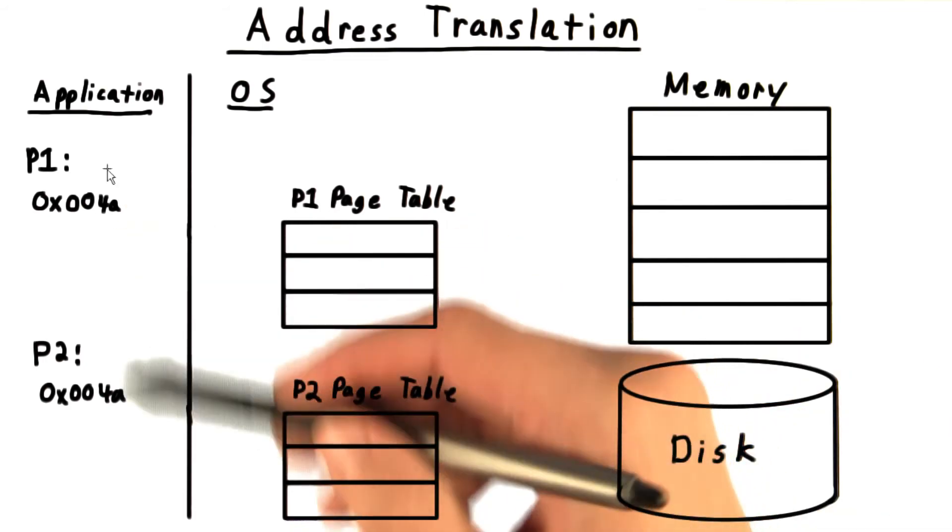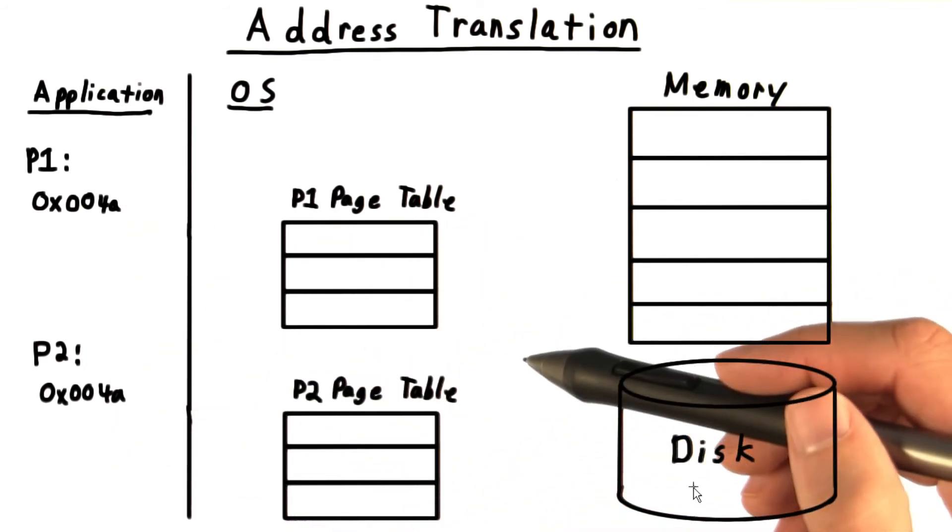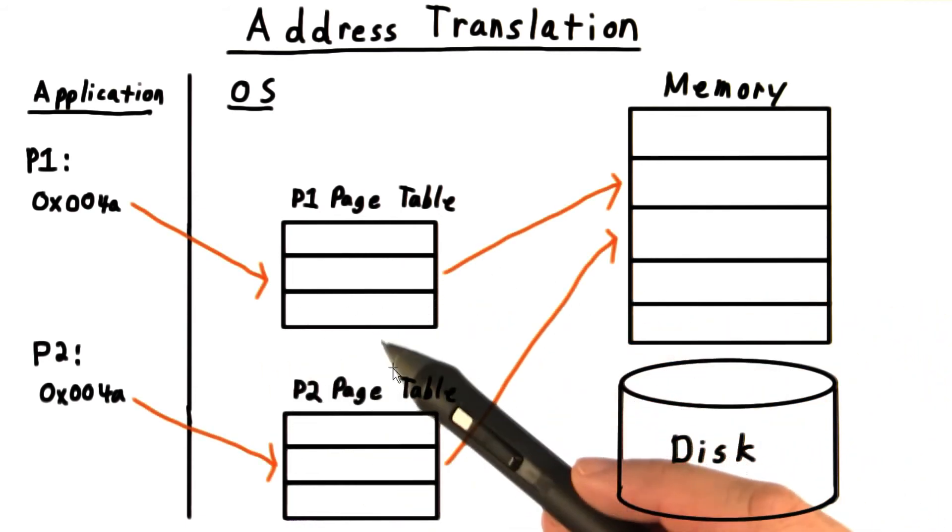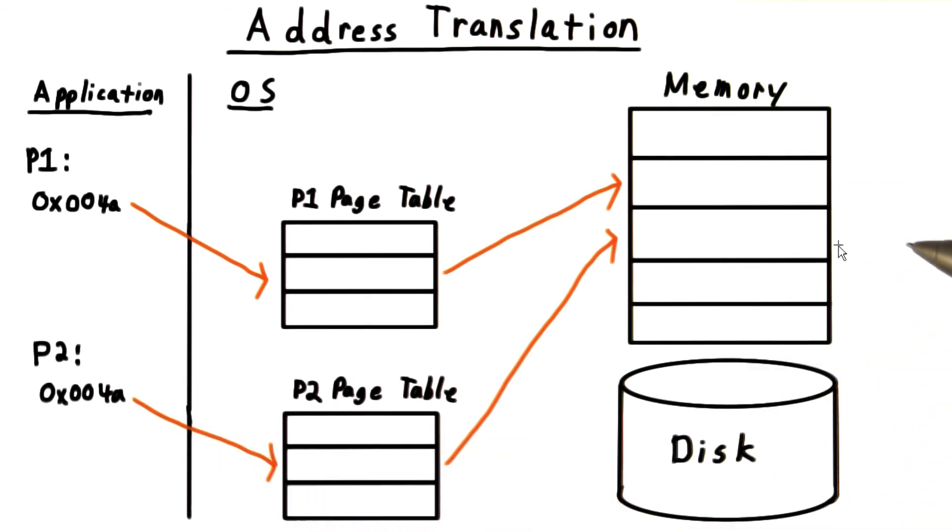Second, it provides protection between processes. As mentioned earlier, without indirection, the applications might find themselves overwriting each other's data. With the operating system properly managing the page tables, however, these two virtual addresses can be pointed to different physical addresses.